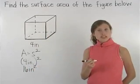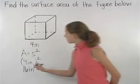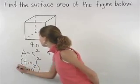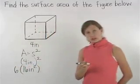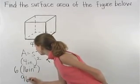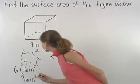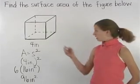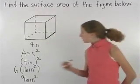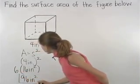Now since there are six sides to a cube, we have 16 inches squared times 6, which is equal to 96 inches squared. So the surface area of the cube shown here is 96 inches squared.